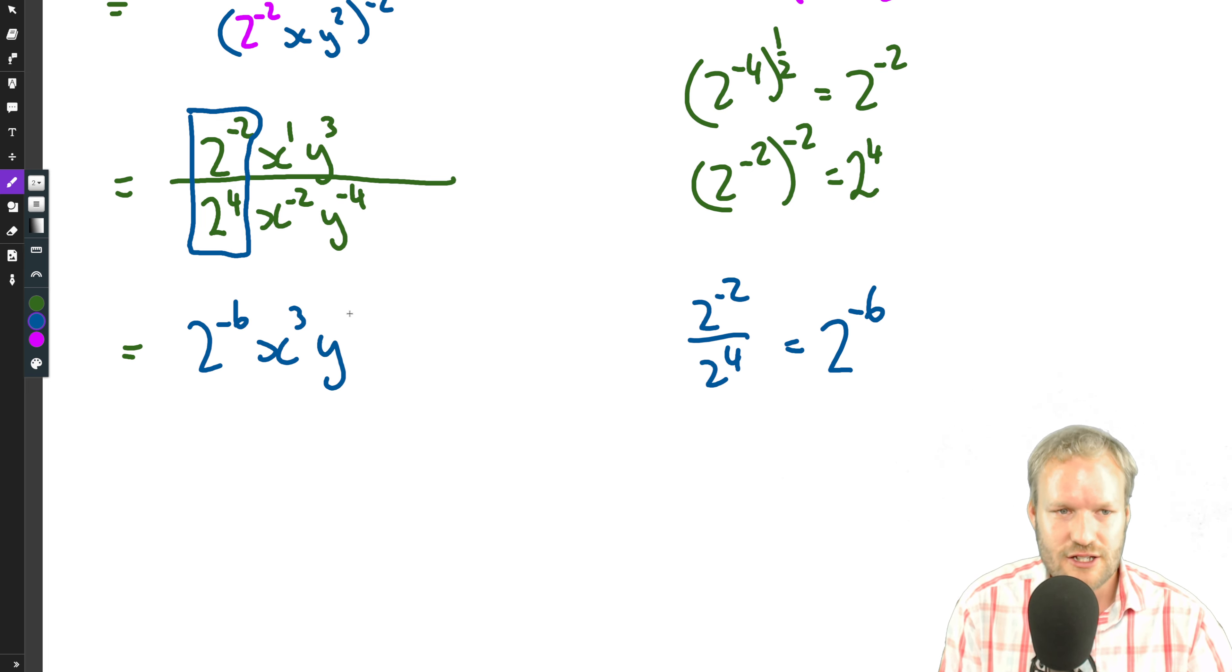Y to the three, y to the minus four, base stays the same, three minus minus four, y to the seven. And that's our final answer if we want to leave it like that. If we really wanted to work this out, we could say, oh well, let's see, two to the power of negative six is one over 64.